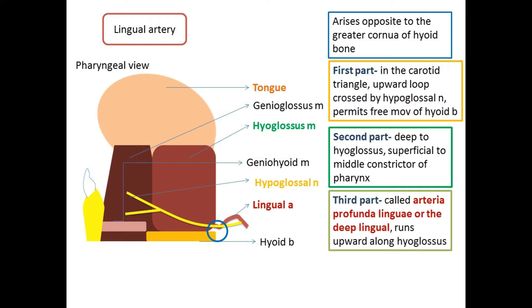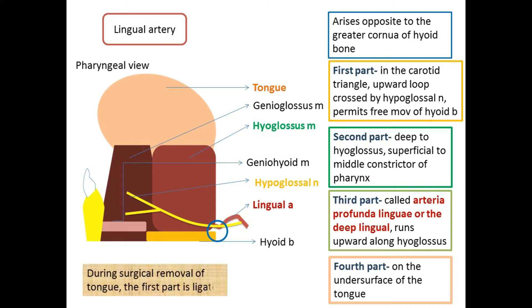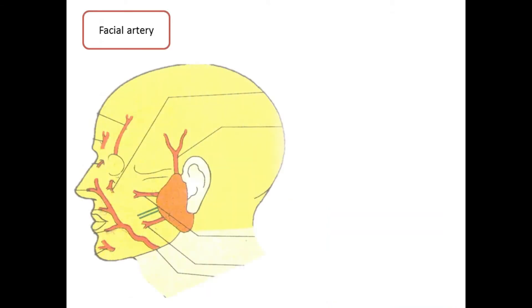The third part of the lingual artery is called the arteria profunda linguae, or deep lingual artery. It runs upwards along the anterior body of the hyoglossus and then horizontally forwards on the undersurface of the tongue. During surgical removal of the tongue, the first part of the artery is ligated before it gives any branch to the tongue or to the tonsil.